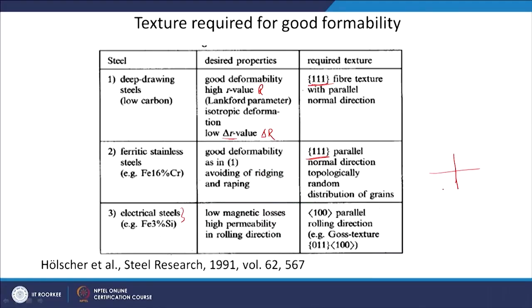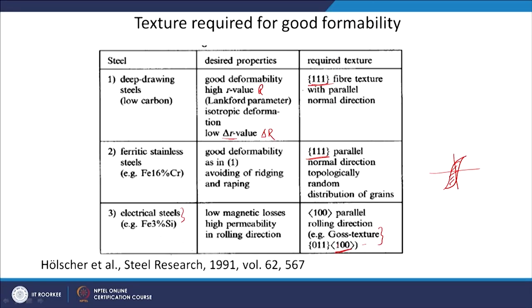Electrical steels are used in transformers with primary and secondary windings. The primary windings have a 50 Hz electrical supply, meaning the material is magnetized and demagnetized 50 times per second as the current flows. If hysteresis losses are very high, every second you have 50 repetitions of the hysteresis loop. The area of that loop determines energy loss, so high energy loss causes the transformer to heat up and reduces efficiency.